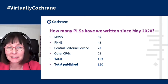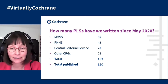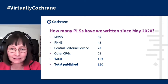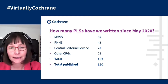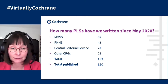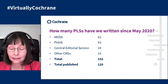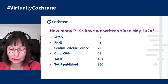How many PLSs have we written since May? A lot — 152 in total, 120 of which have been published. There is a reasonable lag between copy editing and publication; it can take another six weeks before publication occurs. Most of the PLSs written were for the groups involved in the project: the MOS Network, Public Health and Health Systems Network, and the Central Editorial Service. 23 reviews had PLSs written from other groups. In total, the project had 35 of Cochrane's 52 review groups participating at some point, though for many this involved only a single review.